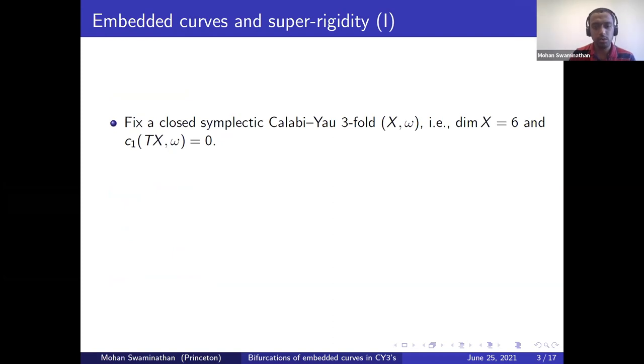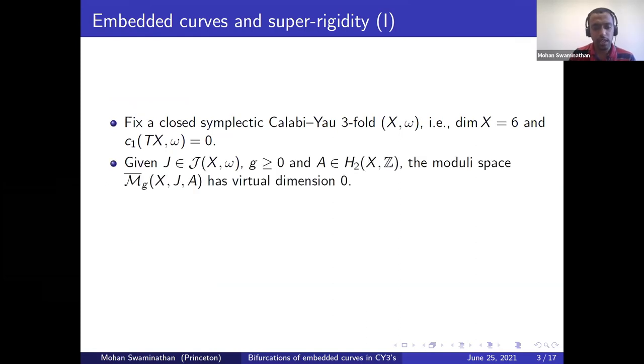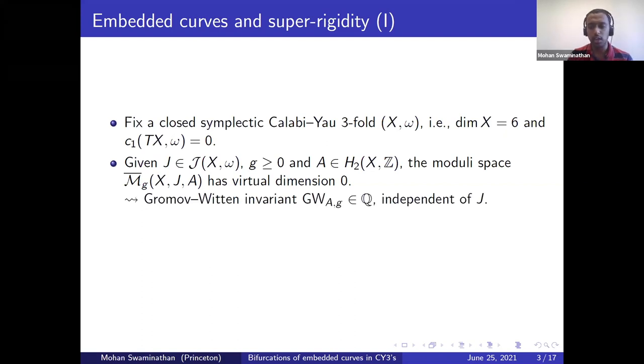Let's start by fixing a closed symplectic Calabi-Yau threefold (X, ω). By this I mean X is six dimensional and c1 of TX is zero. Given any compatible almost complex structure J, a non-negative integer g, and a homology class A, we can form the moduli space of genus g stable J-holomorphic maps to X in class A. A simple Riemann-Roch computation shows that the virtual dimension of this moduli space is zero. Then some virtual fundamental class machinery kicks in and we can get a Gromov-Witten invariant GW(A,g). This is a rational number which is supposed to count morally the number of points in this moduli space, and it's an important fact that this is independent of J and in fact even a deformation invariant of omega.